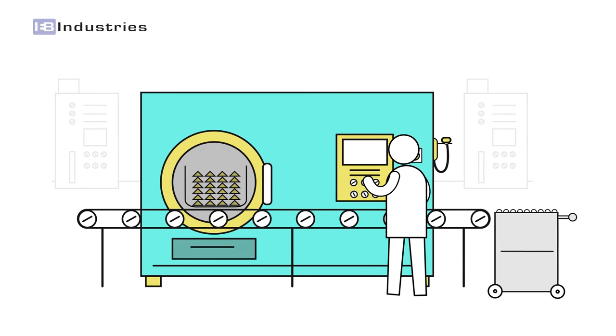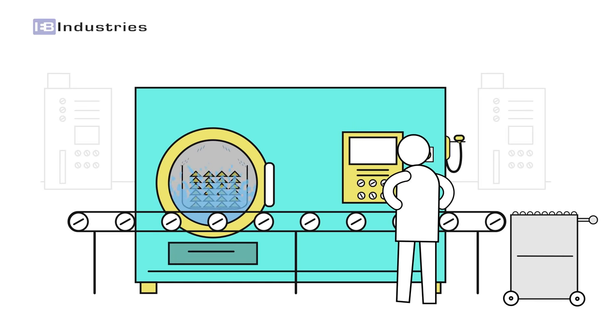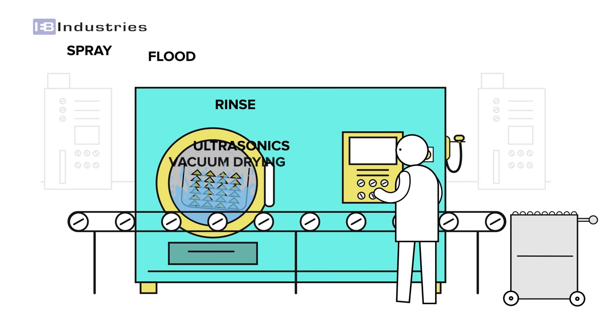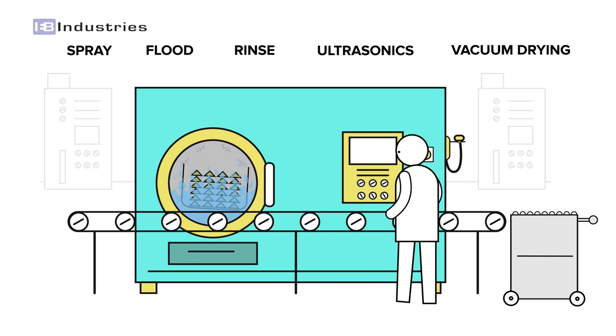Secondly, and just like other washing systems, we can have a number of processes like spray, flood, rinse, ultrasonics and vacuum drying.